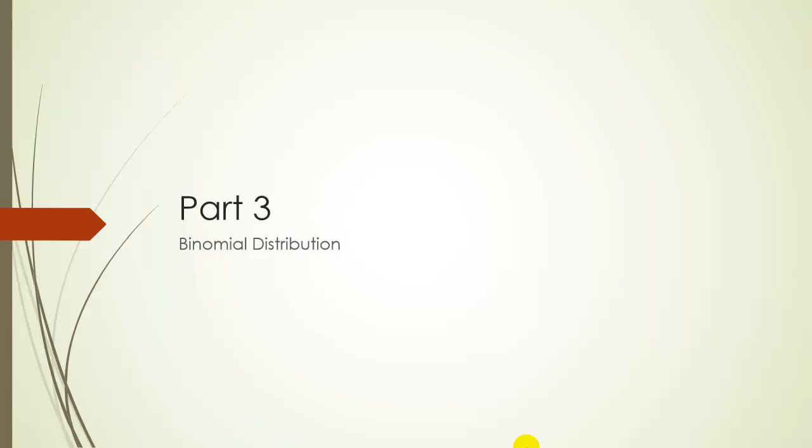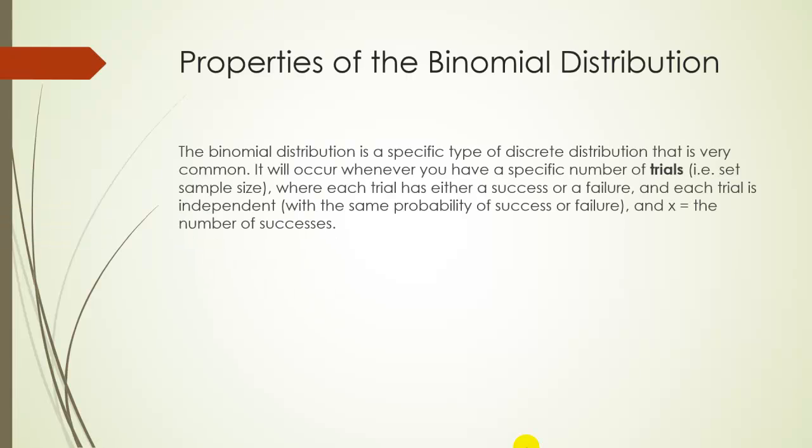For part three, we'll explore the binomial distribution. So some properties of the binomial distribution. First off, the binomial distribution is just a very common type of discrete probability distribution. There are other common types, like the Poisson distribution, that we're not going to explore in this class.